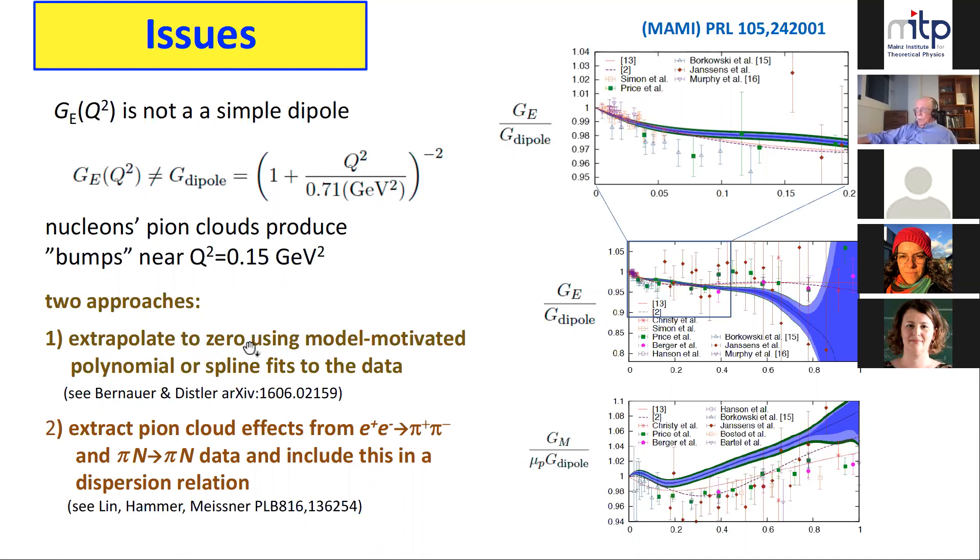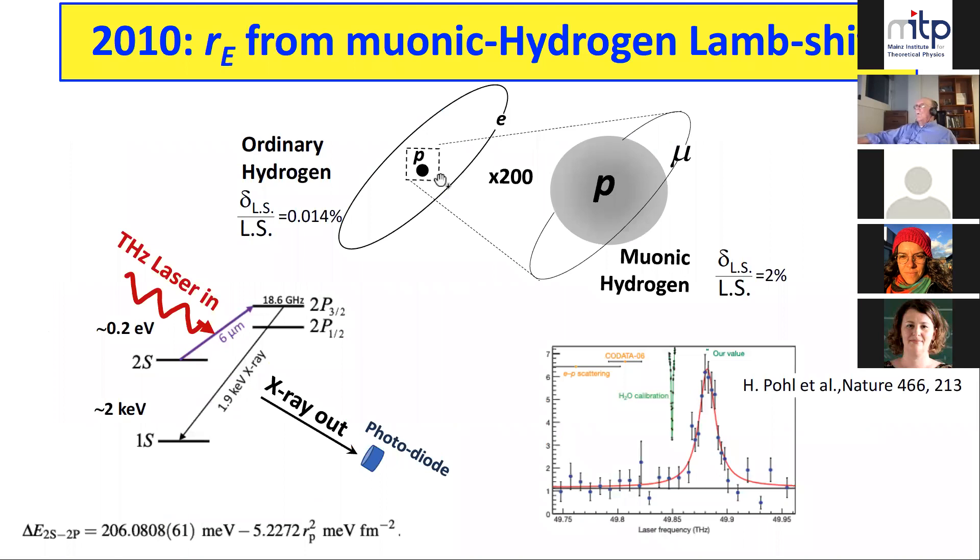There are two approaches. The Mainz approach is to use polynomial fits or spline fits that are model motivated, not out of the blue, and use that to fit the data. The Bonn group does something different - they extract the pion cloud from low energy measurements of e+ e- goes to pi+ pi- and also pi nucleon scattering data, and they include an analytic expression for this into a dispersion relation. And they get a different answer.